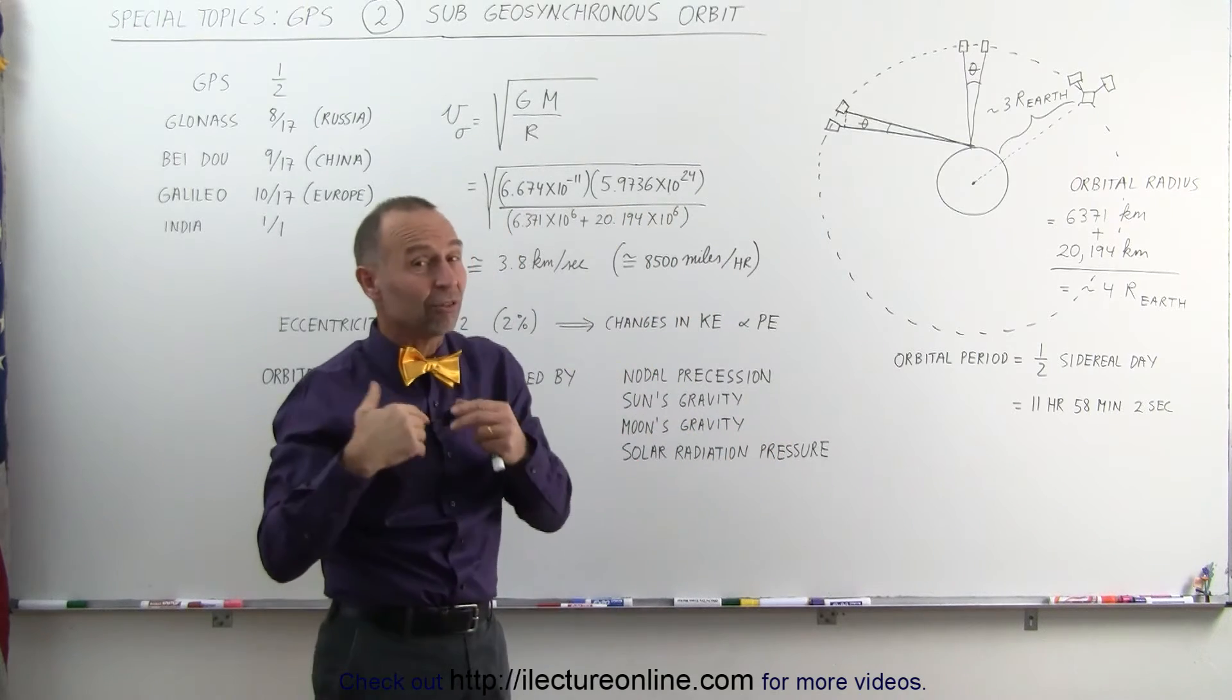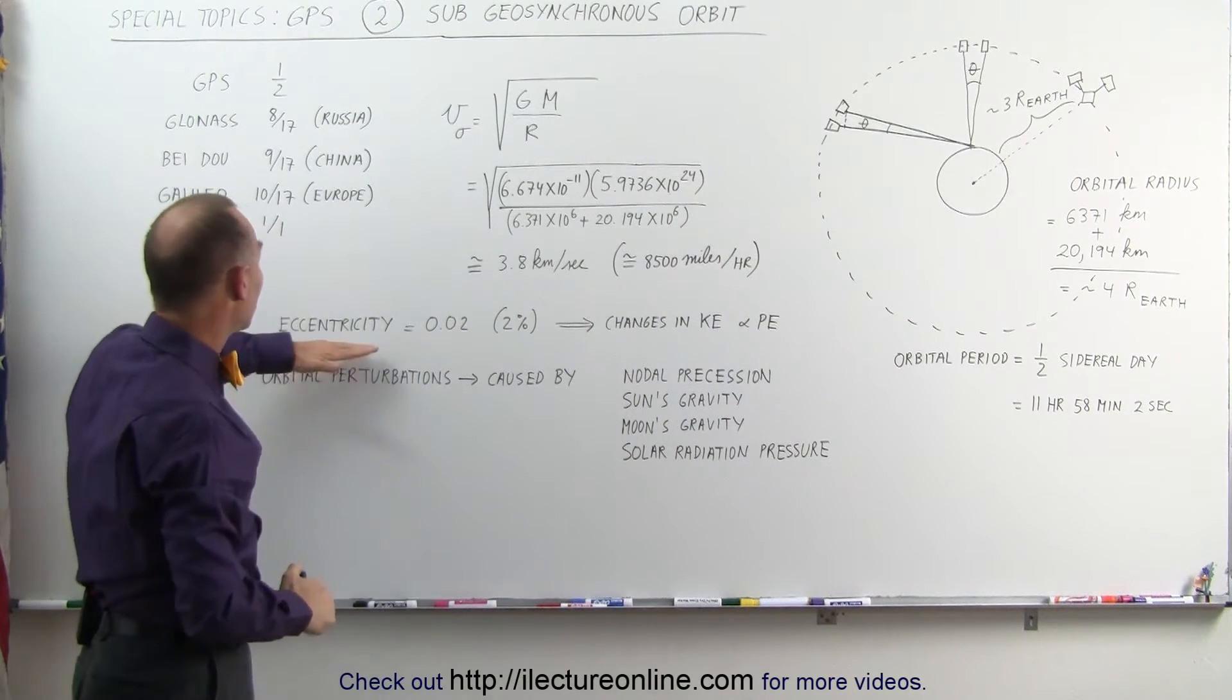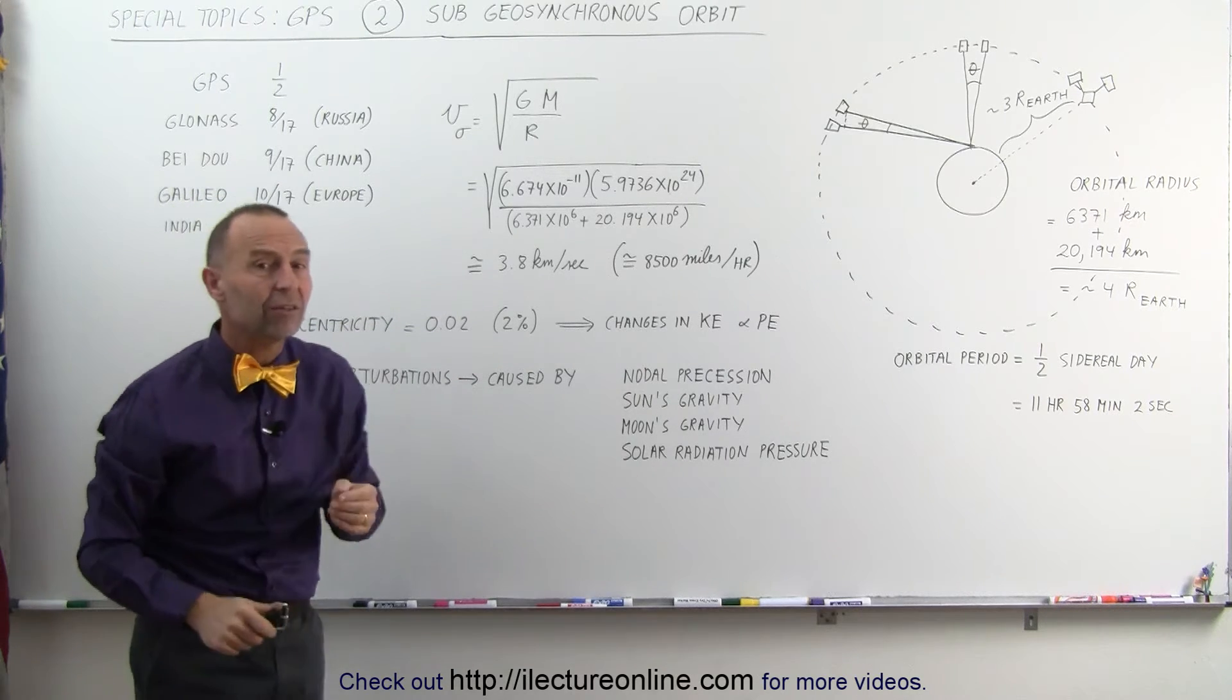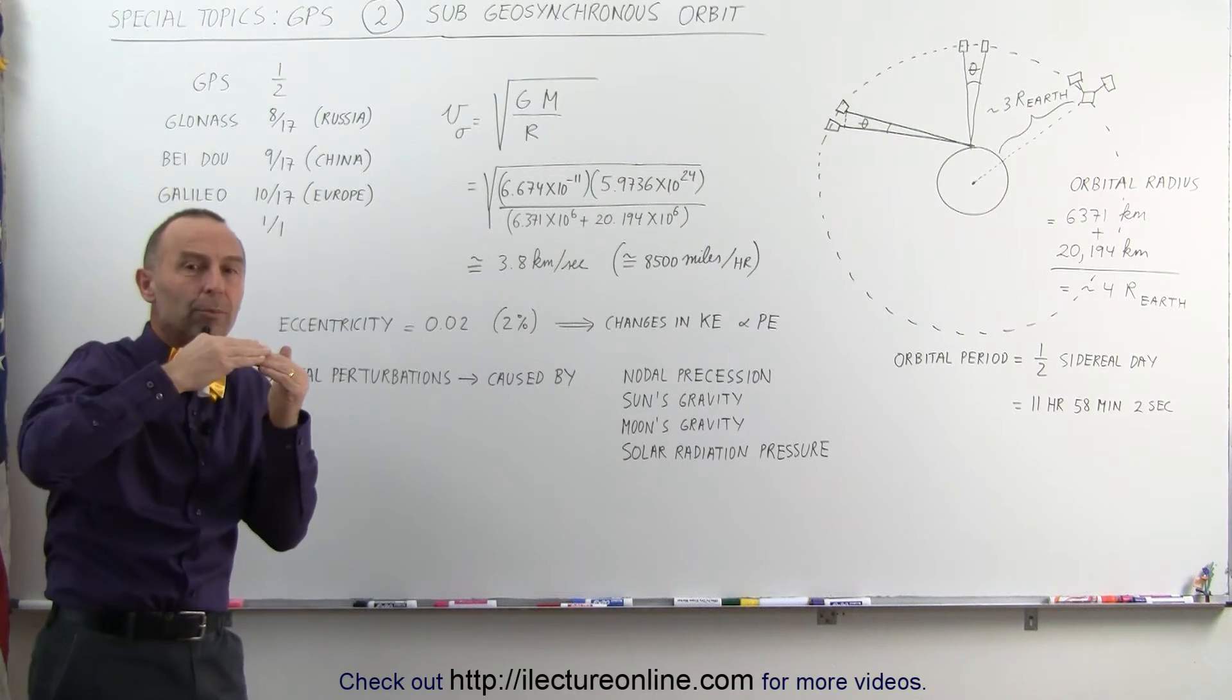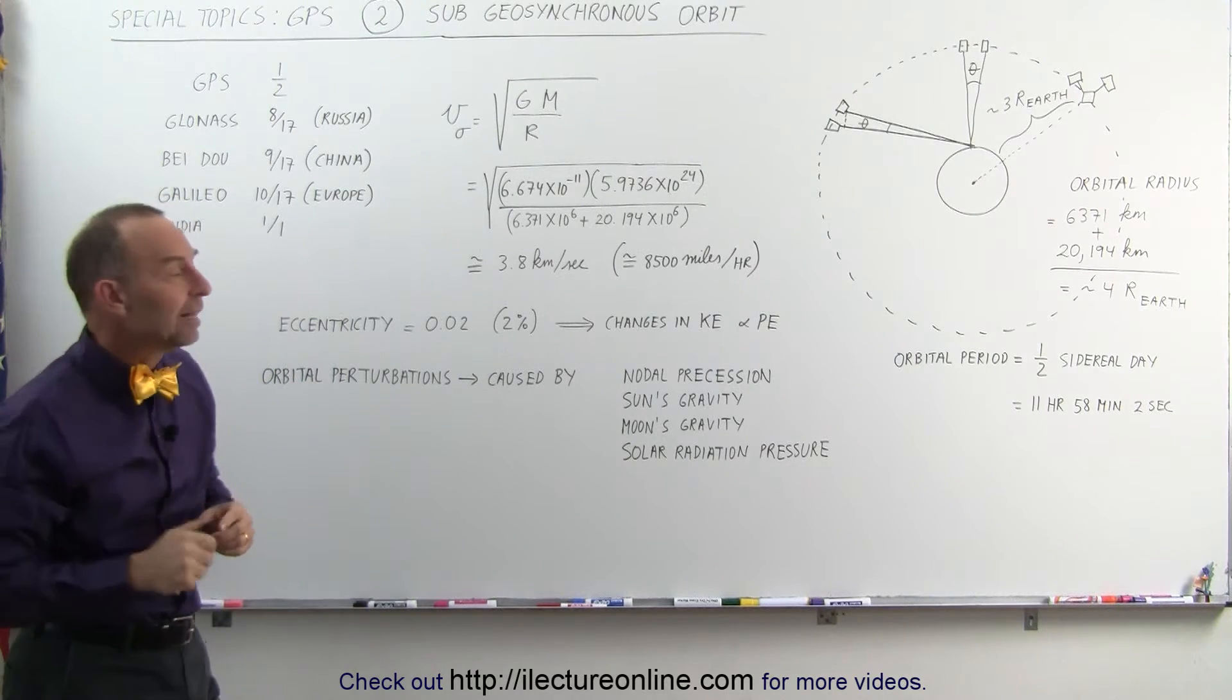Keeping in mind that the orbits are not exactly circles, they're ellipses with a slight eccentricity of 0.02, which is about 2%, which means that it's close to the approach and its farthest approach to the Earth. It's about a 2% difference in that range.